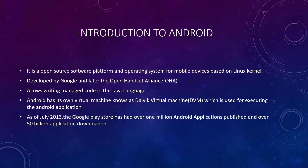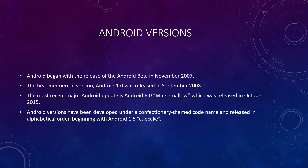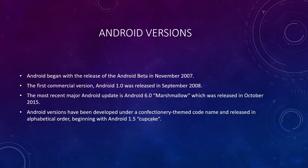Android began with the release of Android Beta in November 2007, and then launched its first version, Android 1.0, in September 2008. The latest Android update, Android 6.0 Marshmallow, was released in October 2015.